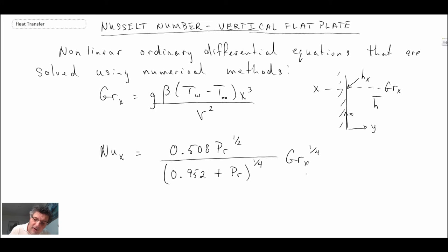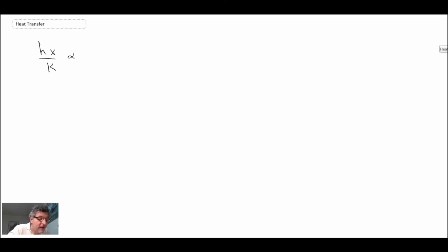Looking functionally, if you recall, the Nusselt number is hx over k. With the relationship we just put here, we see that we have Grashof number to the one-fourth. Well, Grashof number is x cubed, so that is x to the three-fourths. Notice that we have the x here.